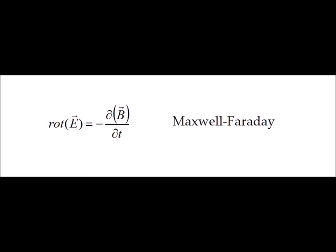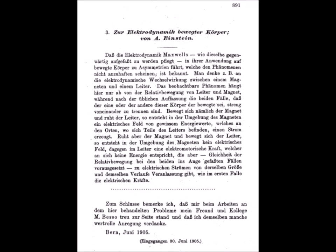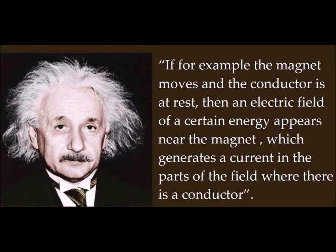The famous article of 1905 by Albert Einstein exposes in its introduction a consequence of the equations of Maxwell: if, for example, the magnet moves and the conductor is at rest, then an electric field of a certain energy appears near the magnet, which generates a current in the parts of the field where there is a conductor.